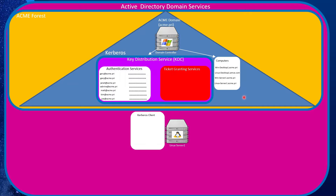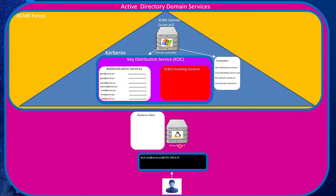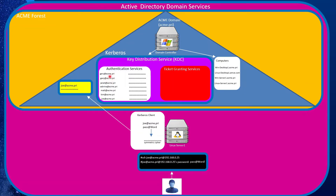Let's see how authentication actually works. First, on the client machine, Kerberos components will be installed — on Windows this is already installed, and for Linux we need to go through the installation process. Then, say a user like Joe wants to connect to a service such as this Linux server. He provides his user ID, which is joe@acme.pri, and sends it to the server. The server challenges him and requests a password. Joe enters his password, and the Kerberos client uses an algorithm to create a hash of the password, which is then sent along with the user ID to the KDC for authentication.